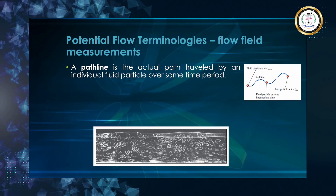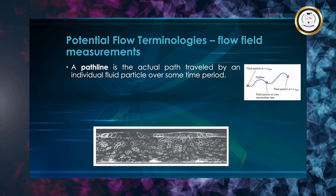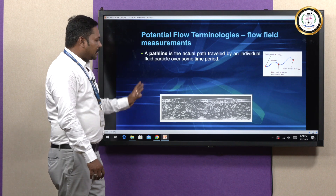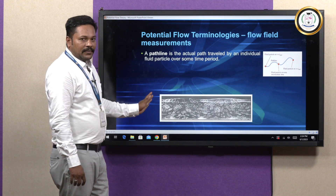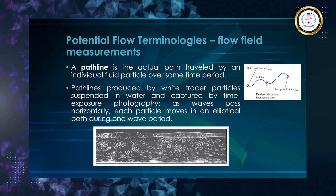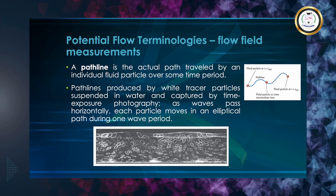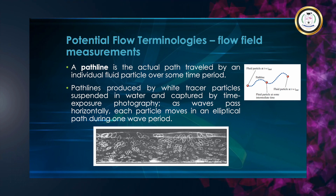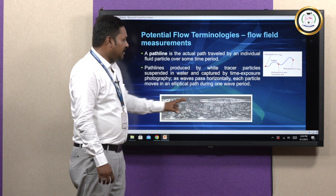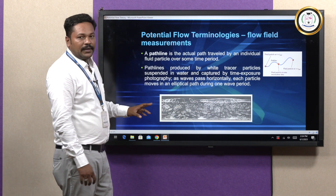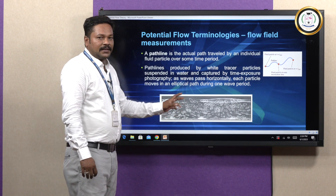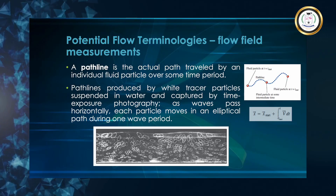This is also an example of pathline — a photographic image where we consider the fluid particles and their movement. The water which has been poured in the glass shows pathlines produced by white tracer particles suspended in water using time-exposed photography. It shows an elliptical shape, so we see the elliptical path during one wave period — how the fluid particles' nature has been studied. We have the pathline equation: X equals X-dot, the time-varying component of velocity function.